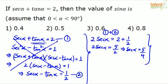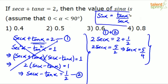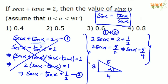With sec α = 5/4, use the right-angle triangle: sec α is hypotenuse by adjacent, so hypotenuse = 5 and adjacent = 4. By Pythagorean theorem, the opposite side is 3 — the classic 3-4-5 triplet. Therefore sin α is opposite by hypotenuse = 3/5 = 0.6, so option three is the answer.